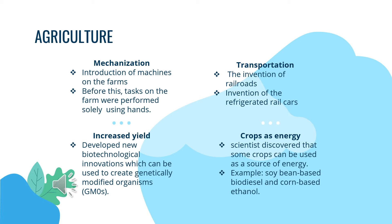Increase of yield is the third positive impact in the agriculture area. For a long time, farmers depended on agricultural chemicals like herbicides and pesticides to control weeds, reduce pest damage, and increase yield. All these were discovered through scientific research. Also, scientists underwent experiments and developed new biotechnological innovations which can be used to create genetically modified organisms, which is GMO.